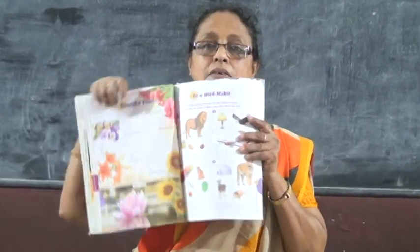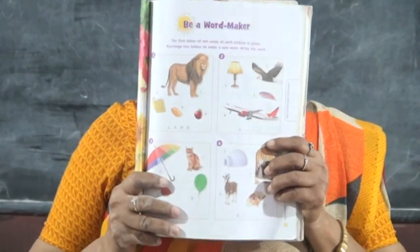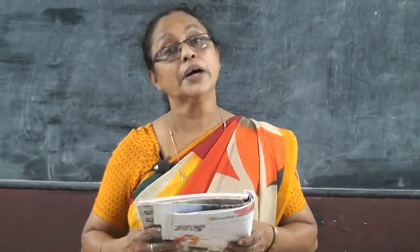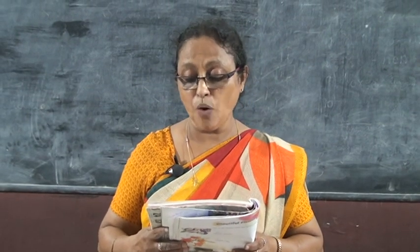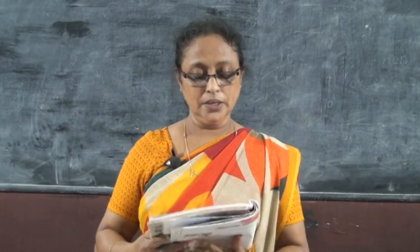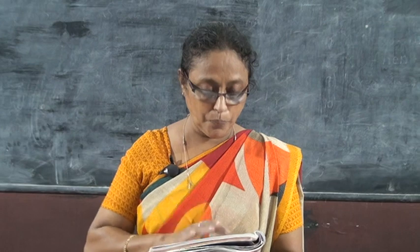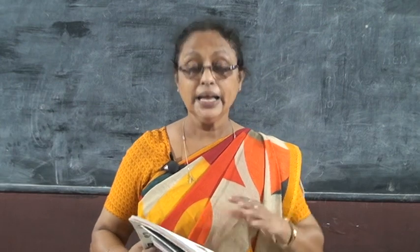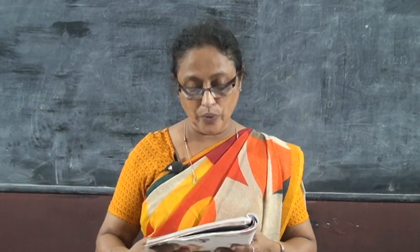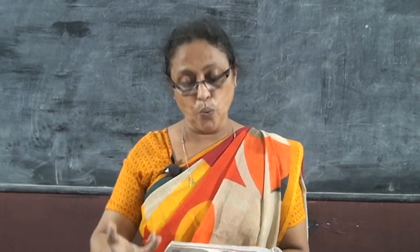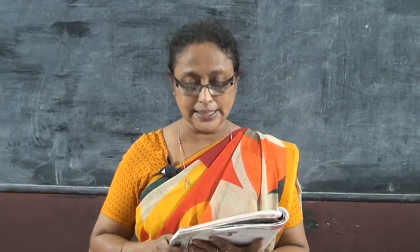Then we can go to the next step. That is the BA Word Maker, the second activity. In the BA Word Maker, the first letter of the name of each picture is given — rearrange the letters to make a new word and write the word. In the first box you are having the picture of a line, book, mango, then apple. With those letters you make a new word — that is 'land'.